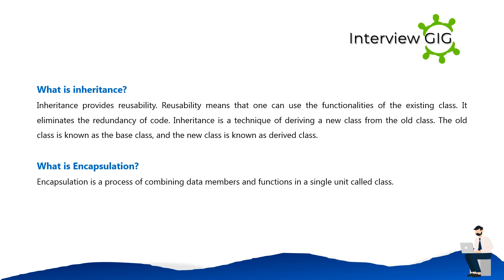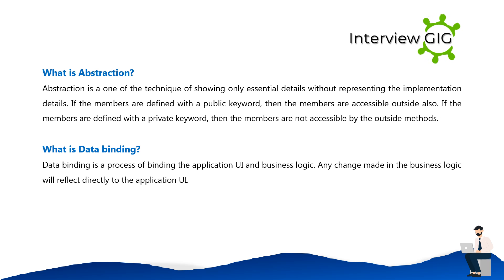What is inheritance? Inheritance provides reusability, meaning one can use the functionalities of an existing class, eliminating redundancy of code. Inheritance is a technique of deriving a new class from an old class; the old class is known as the base class and the new class is the derived class. Encapsulation is a process of combining data members and functions in a single unit called a class. Abstraction is a technique of showing only essential details without representing implementation details. Members defined with public are accessible outside; members defined with private are not accessible by outside methods.